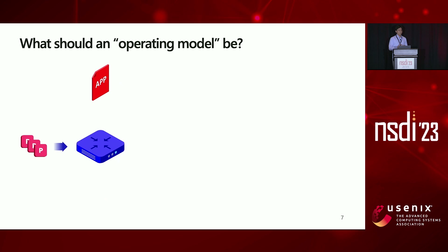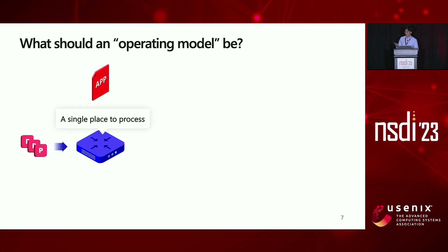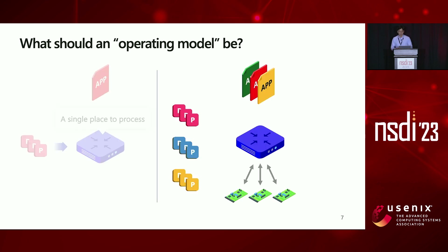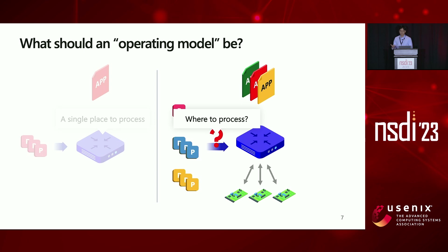To design such an OS, we first need to think about the runtime operating model, which decides where to run the workload — in our case, a packet. If you have a single switch and a single app, there's only one place to process a packet. However, when you have multiple apps and multiple devices, we need to decide where to process these packets.